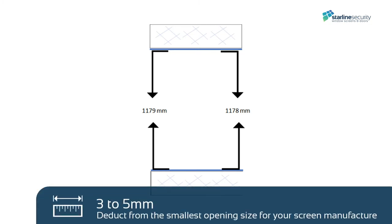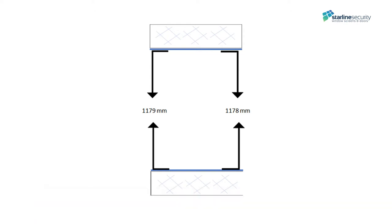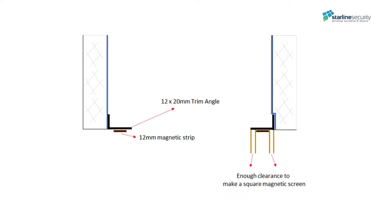We recommend deducting 3-5mm from the smallest opening size for your screen manufacture and ordering size. For this installation, we deducted 5mm from the minimum sizes. This allows the screen to sit on the 20mm angle, even though the casement window is not square. For the angles, order them a little bit bigger than the opening sizes and cut to size before installing. Casement windows are known to have different measurements for each opening — you have to measure each one.